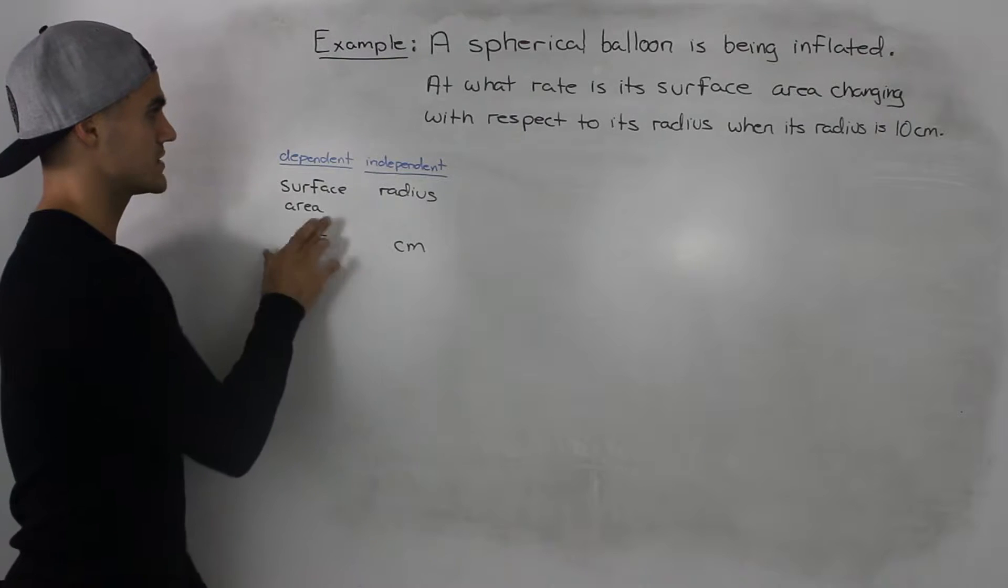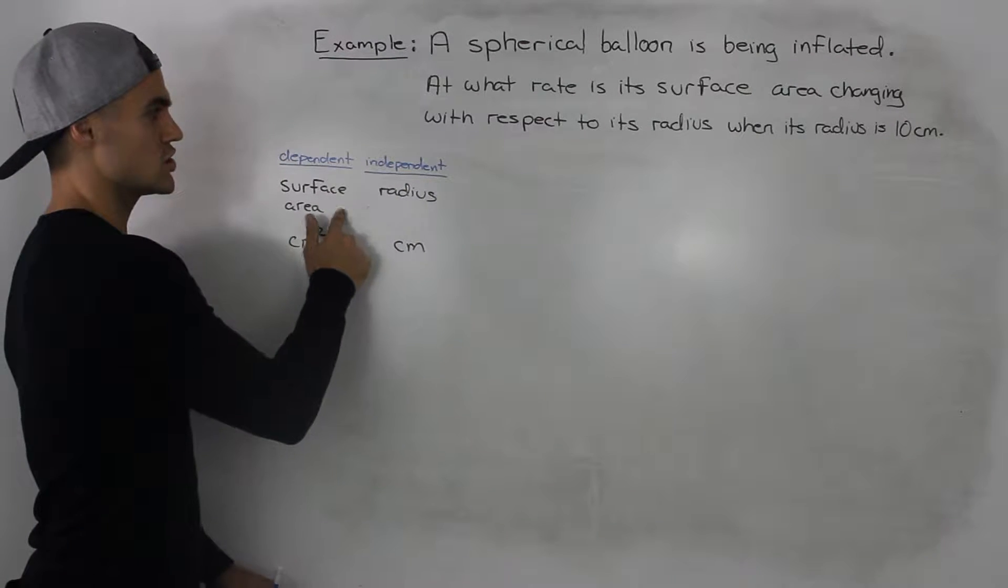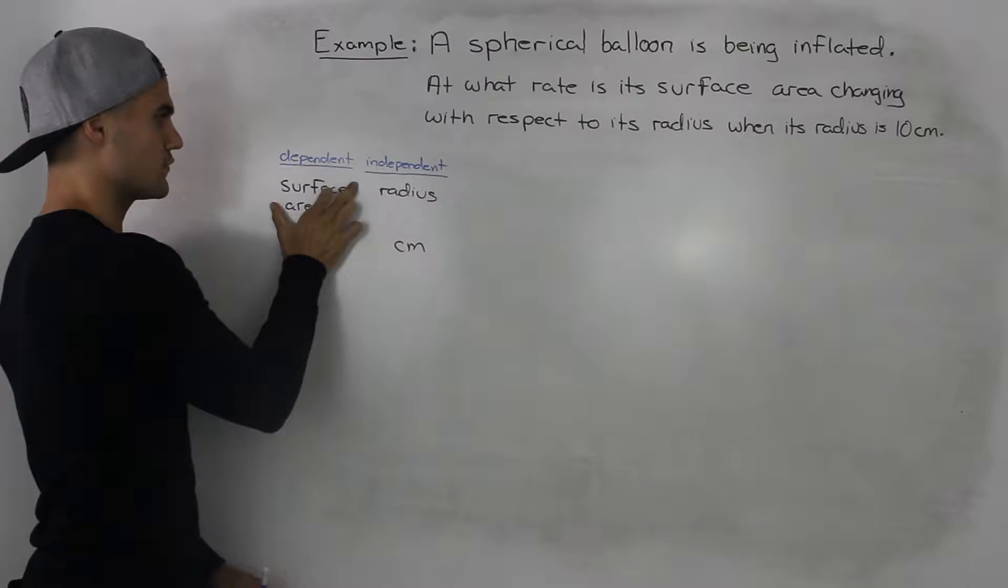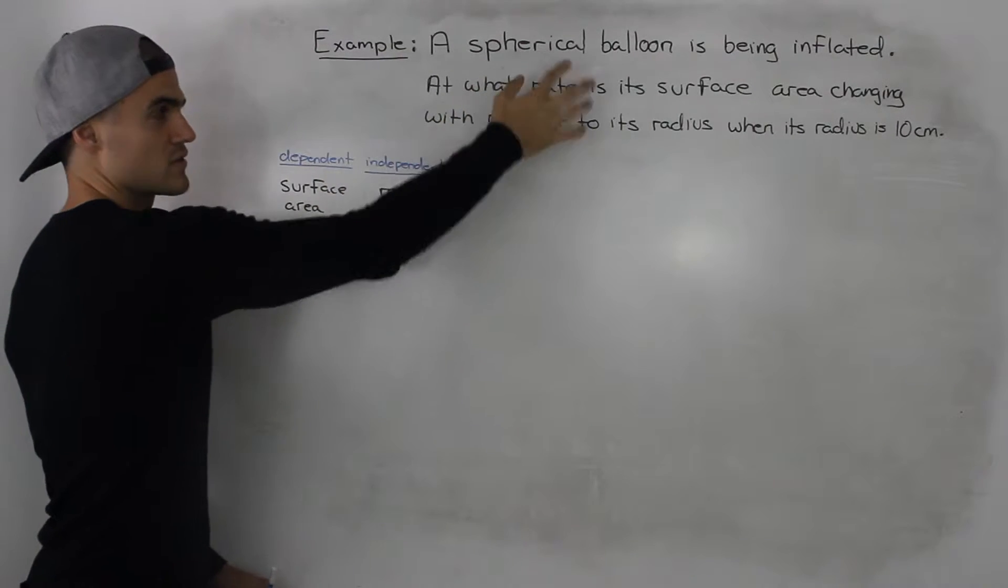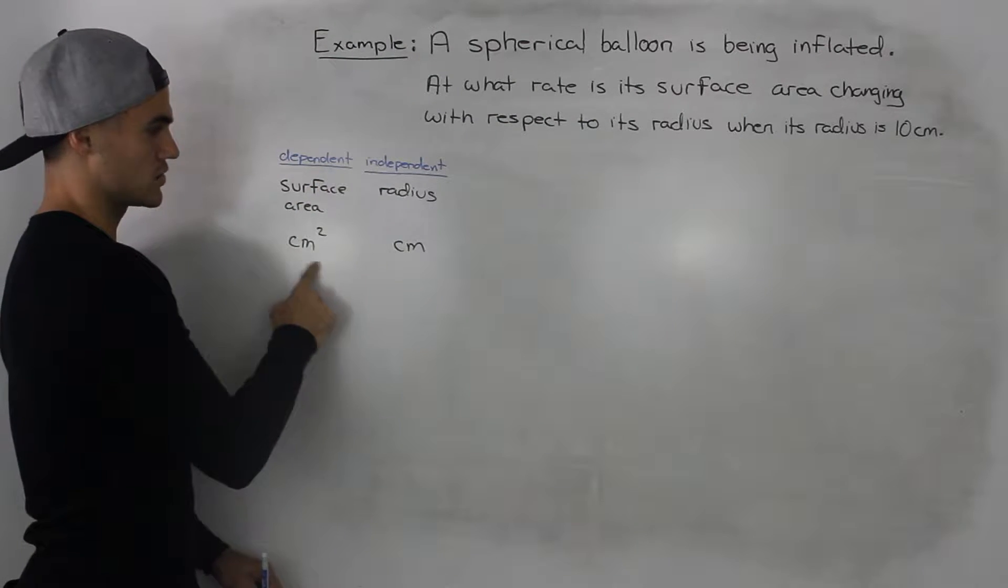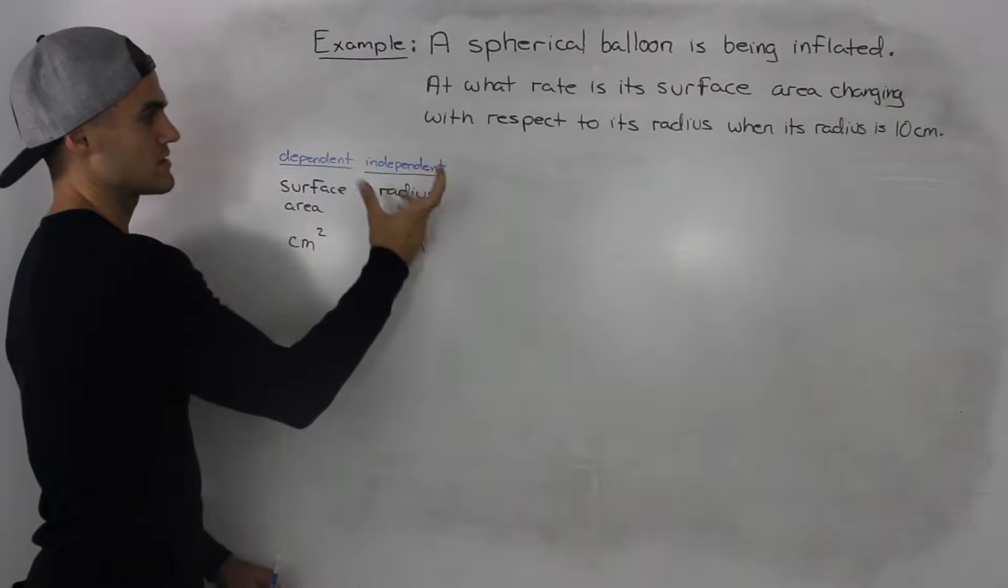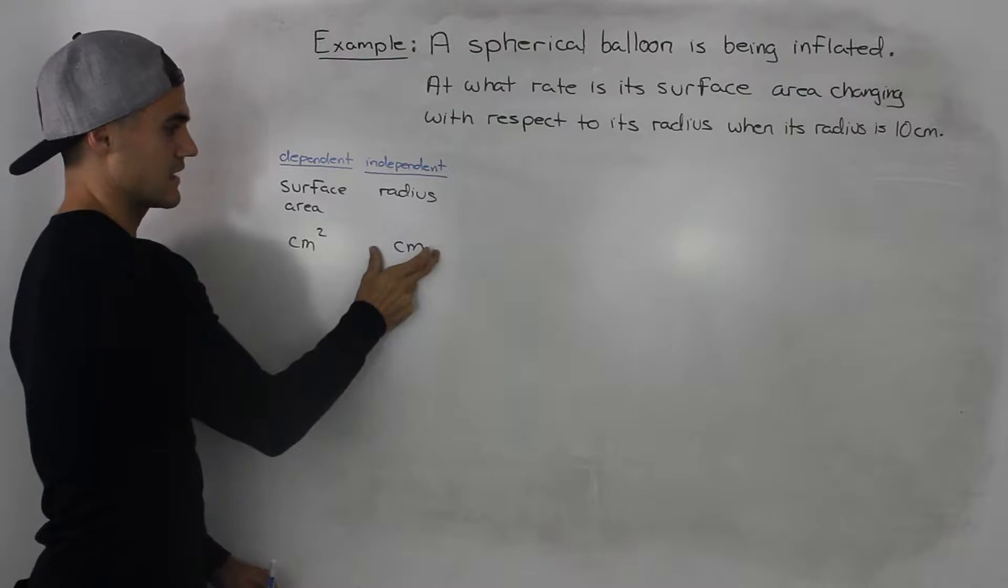So the first thing to figure out, what's the dependent variable, what's the independent variable? The surface area is changing with respect to the radius. So the surface area of the sphere or the spherical balloon is the dependent variable and that's in centimeters squared, and the independent variable is the radius of the sphere. So that's in centimeters.